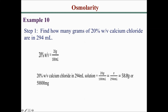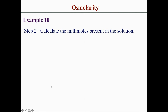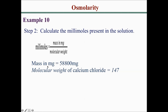Setting up a proportion: 20 grams over 100 ml equals x over 294 ml. Cross-multiplying gives us 58.8 grams or 58,800 milligrams. Since the question asks for millimoles, we use the formula millimoles equals mass in milligrams divided by molecular weight. With a mass of 58,800 mg and molecular weight of 147, we get 400 millimoles.